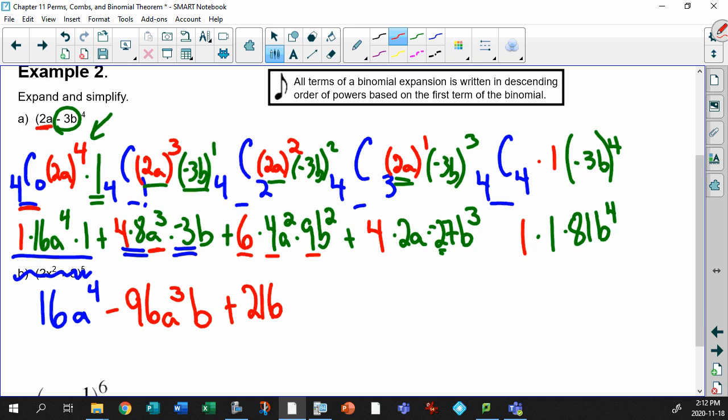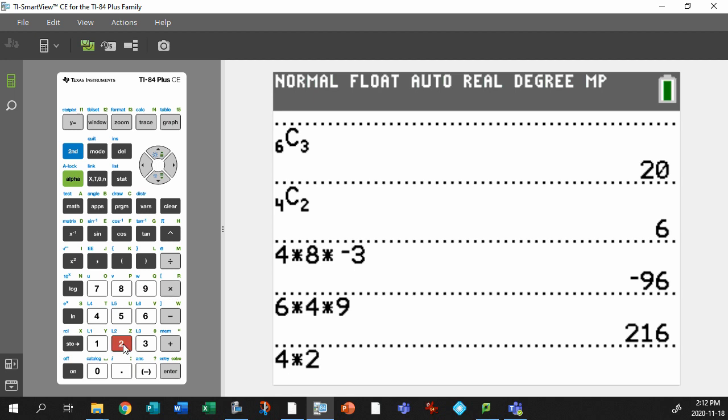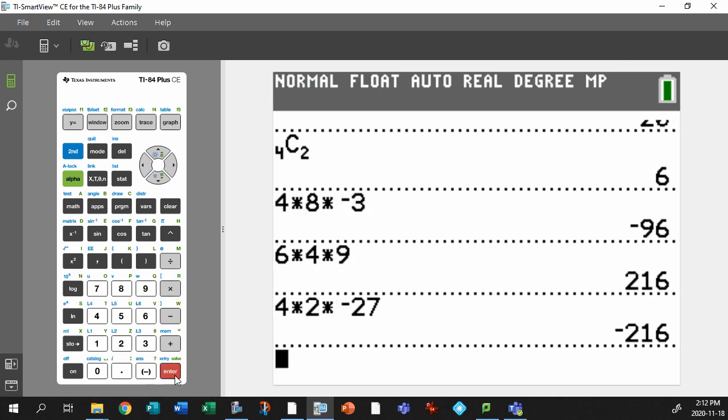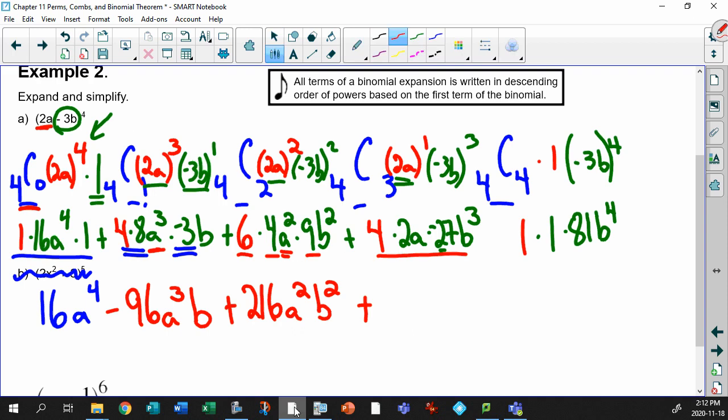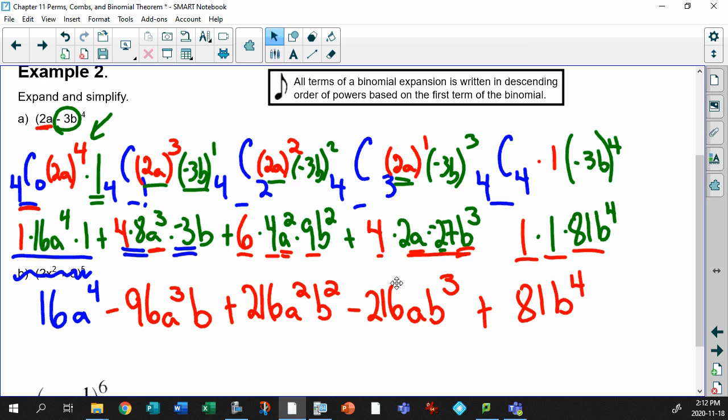Next one, plus 4 times 2 times negative 27, 4 times 2 times negative 27 is negative 216 again. Wow, that's kind of weird. This is minus 216 though, so we better put minus 216ab cubed. Finally, plus 1 times 1 times 81, 81b to the 4. There's that expansion, wild. So the next podcast I want to even do more expansions and I want to do them even faster. Look forward to that.